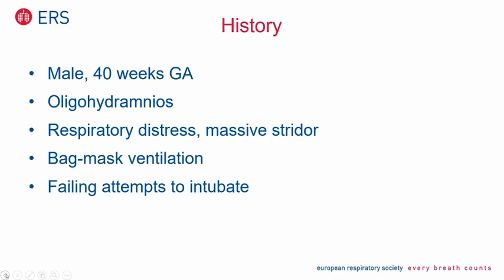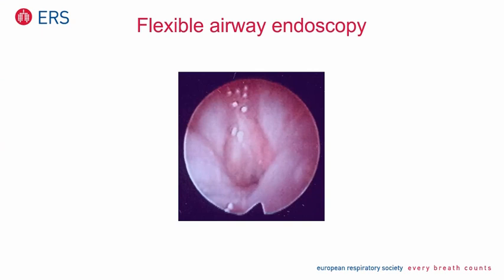Apparently bag-mask ventilation worked, so ventilation and oxygenation were okay, but there was this massive inspiratory and expiratory stridor, meaning there must be very severe obstruction. If you think of such an obstruction with biphasic stridor, it must be somewhere in the central airways — either in the larynx, the trachea, or both. As the neonatologists failed to intubate the child, they called me to do an airway endoscopy to sort out what was going on. This is just a still picture because I don't want to show the video.